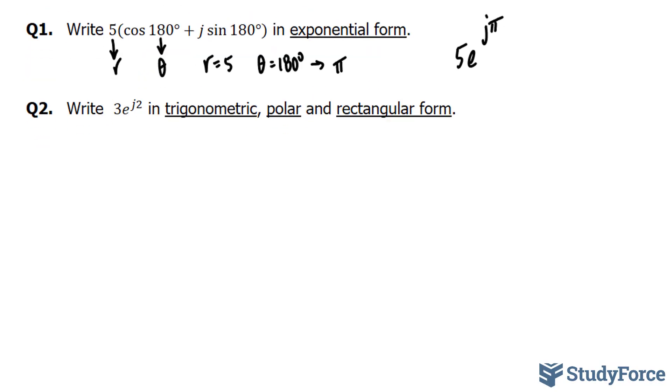In question 2, we're asked to write 3 times e to the power of j2 in trigonometric form, polar and rectangular form. This question is a little bit more involved. Let's start off by pointing out our radius and our angle. Our radius is 3 and our angle theta is 2 or 2 radians.